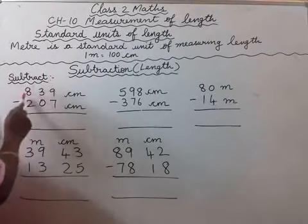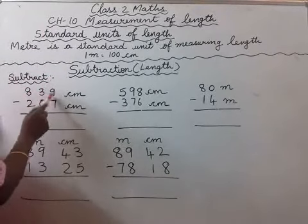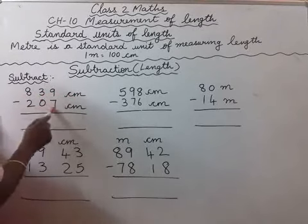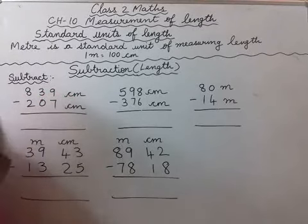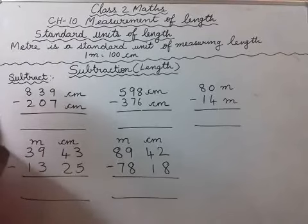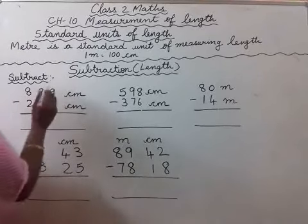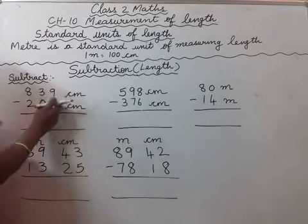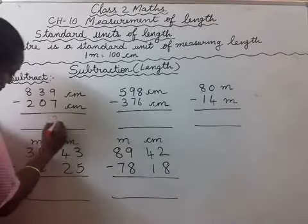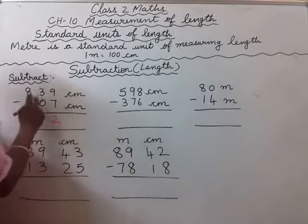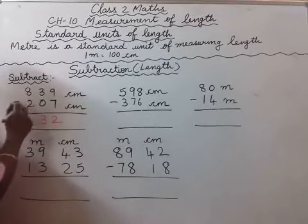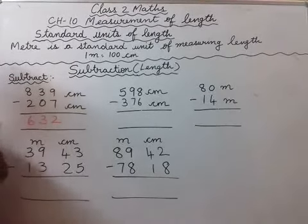So, subtract 839 centimeter minus 207 centimeter. We subtract both. First, 9 minus 7 will be 2, then 3 minus 0 is 3, and 8 minus 2 is 6.